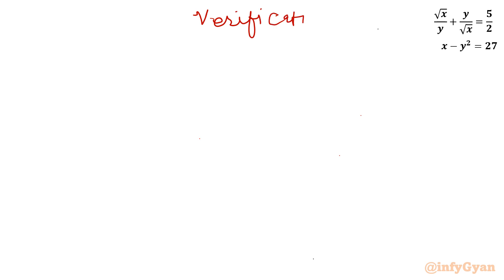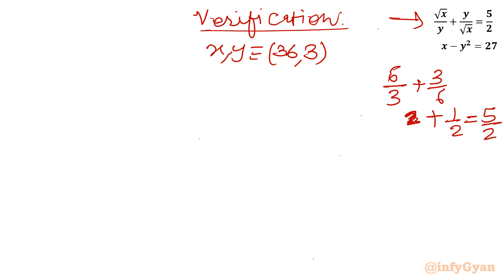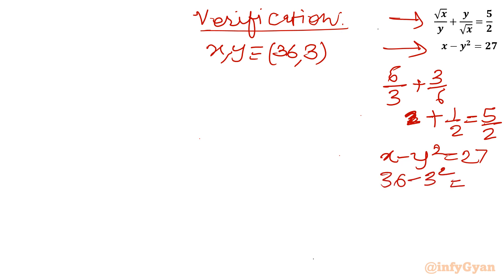Let's verify. For x equals 36, y equals 3: Equation 1 gives root 36 over 3 plus 3 over 6, which is 6 over 3 plus 3 over 6, equaling 2 plus 1 over 2, which is 5 over 2. Correct! For Equation 2: x minus y squared equals 36 minus 9 equals 27. Verified! I hope you like this video. Thank you so much for watching. Do not forget to like, share and subscribe. Bye-bye till next video. Good luck and take care.